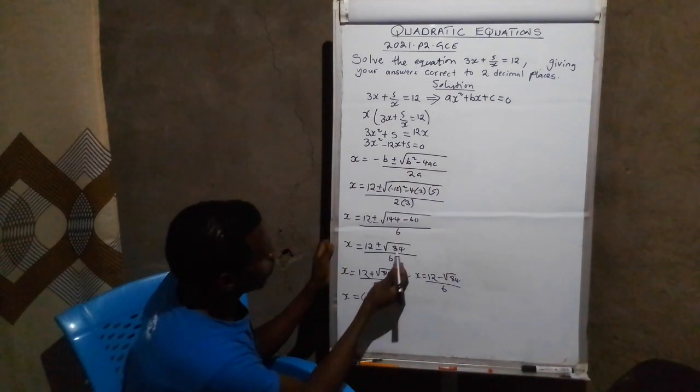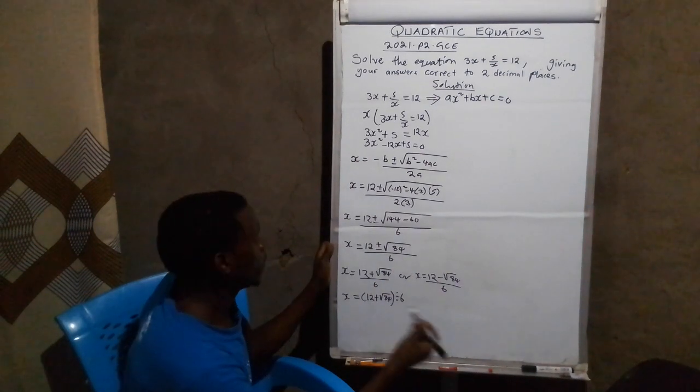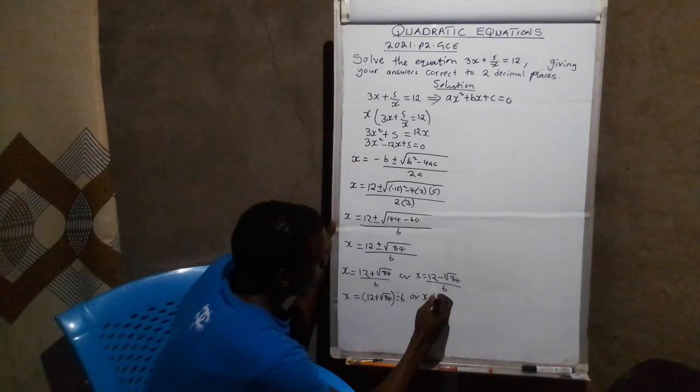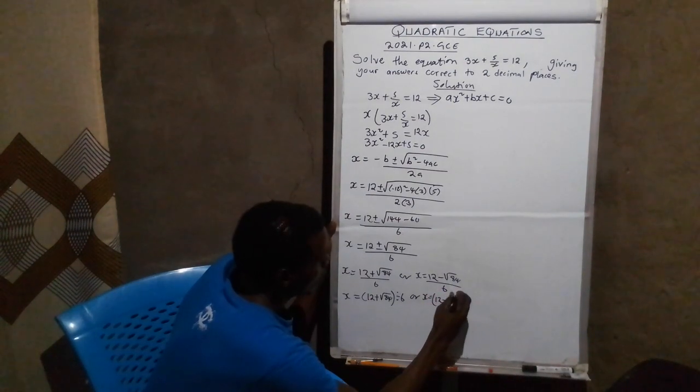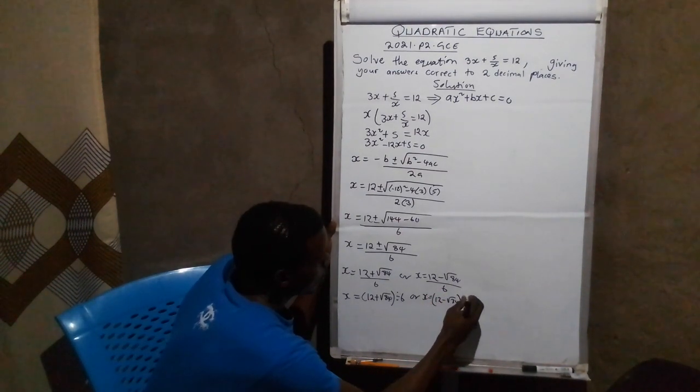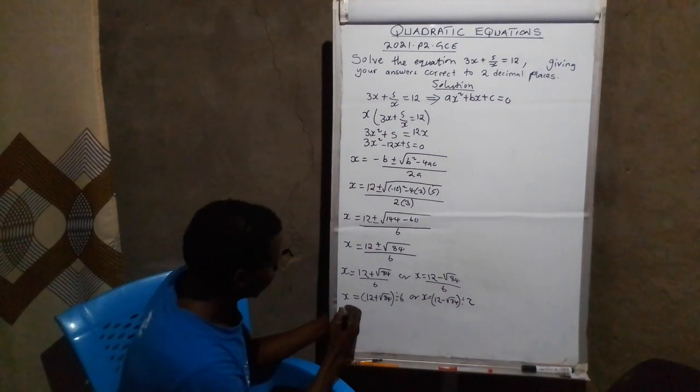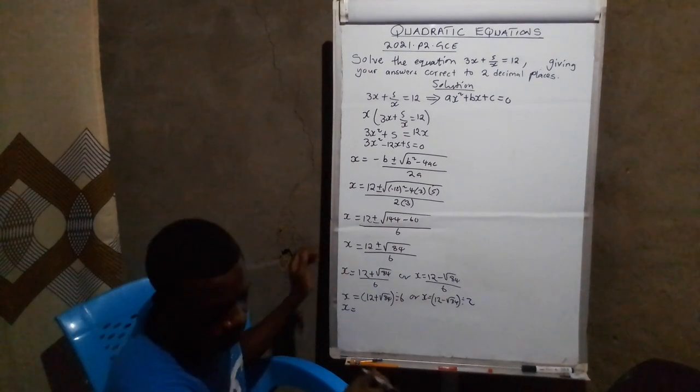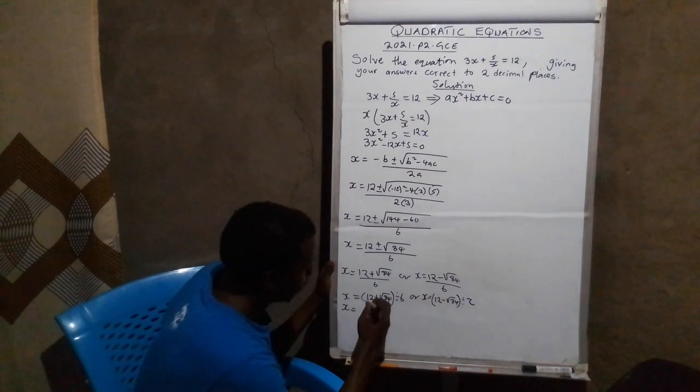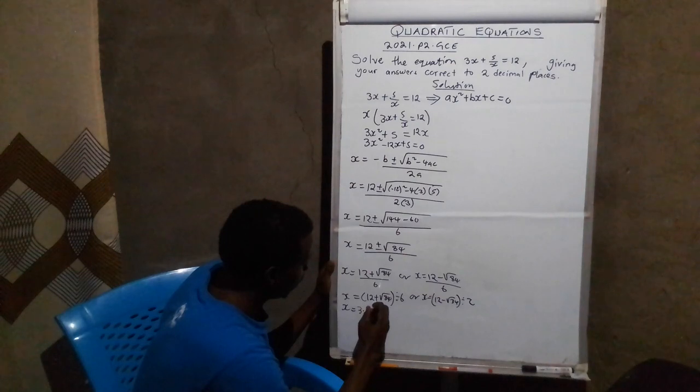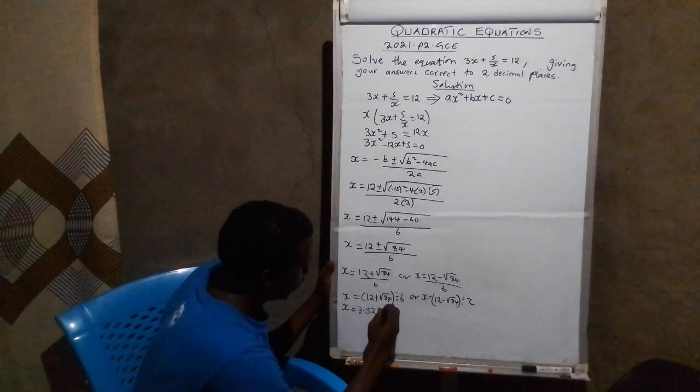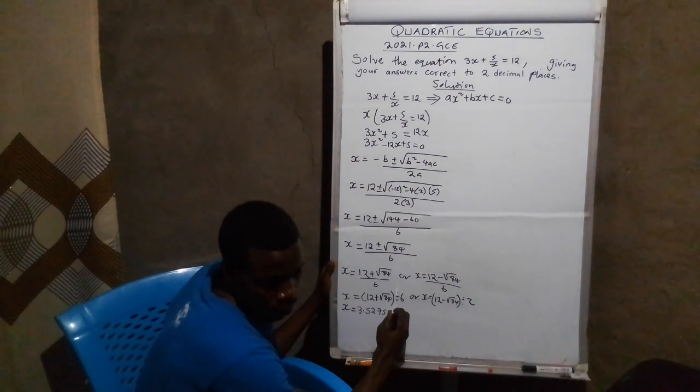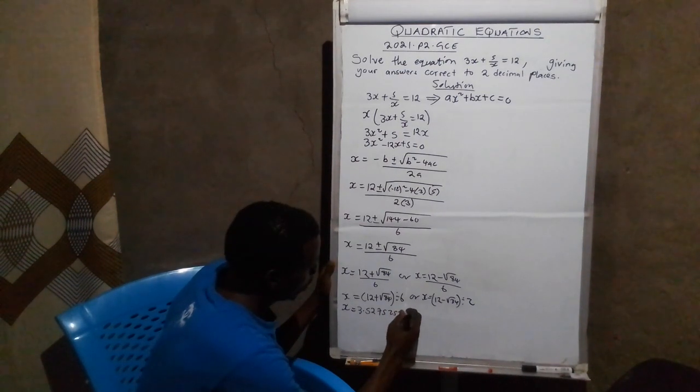You have not changed root of 84 because 84 is not a perfect square number. Or x equals to open brackets, 12 minus root of 84, close brackets, divided by 6. From there, x will be equal to this side. When you punch everything on your calculator, this side we are going to have 3.85275252323.